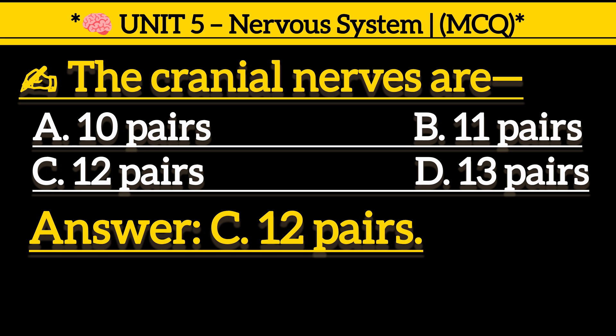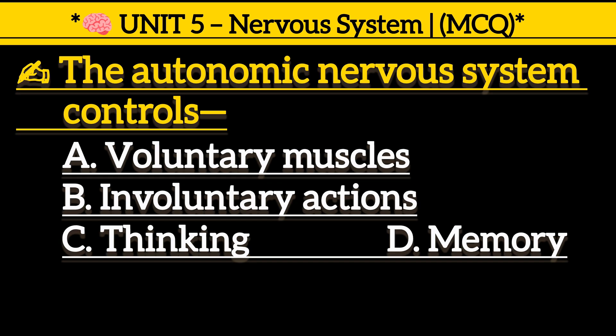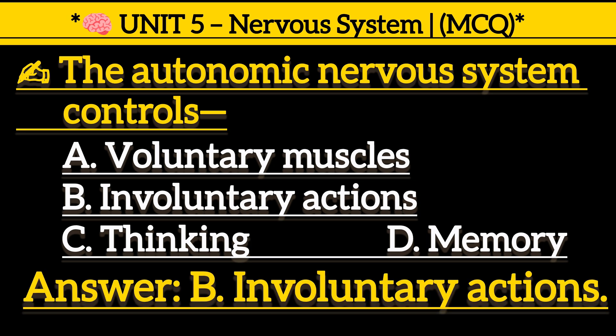The autonomic nervous system controls: Option A, voluntary muscles. Option B, involuntary actions. Option C, thinking. Option D, memory. Correct answer is Option B, involuntary actions.